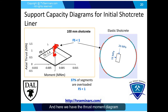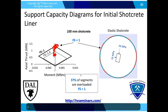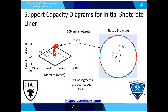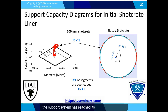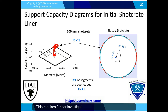The thrust-moment diagram for the 100 mm shotcrete liner shows that, although the thickness is increased, there are still some points outside the black diamond. About 37% of segments have a factor of safety less than unity, shown in red. Overloading of shotcrete means the support system has reached its maximum capacity, but it is not possible to conclude that the liner will fail based on this analysis alone. Further investigation using a discontinuum method is required.